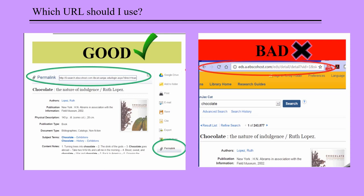Using the URL in your browser's location bar will not take your reader to the article you are viewing in the database, even if they have a subscription. Subscription database products are hidden under many layers of proxy servers and security, so most databases provide permalinks for the convenience of their subscribers. Use the permalink whenever possible. The permalink is also much shorter than the URL in the browser location bar.